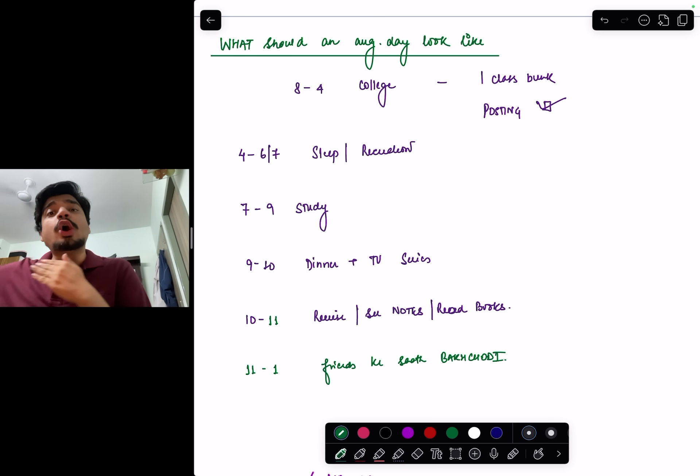What should your ideal day look like in third year? It's a long race - slow and steady wins. Eight to four there will be college. Even if you bunked one class, slept, had a party with friends last night, please attend postings. This is a diligent request from my side. Even though I'm 12 years done with my medical journey now working as a consultant, theory classes plus/minus you can skip, but do attend the postings. The clinical skills you acquire - that's the main purpose of MBBS. Otherwise you can do a correspondence course with online coaching. Go for postings, attend those three hours. After coming from college at four or five o'clock, two-three hours sleep, some recreation, play with your friends. From seven to nine o'clock, study properly for two hours, watch videos, see notes, make notes. Nine to ten, dinner.